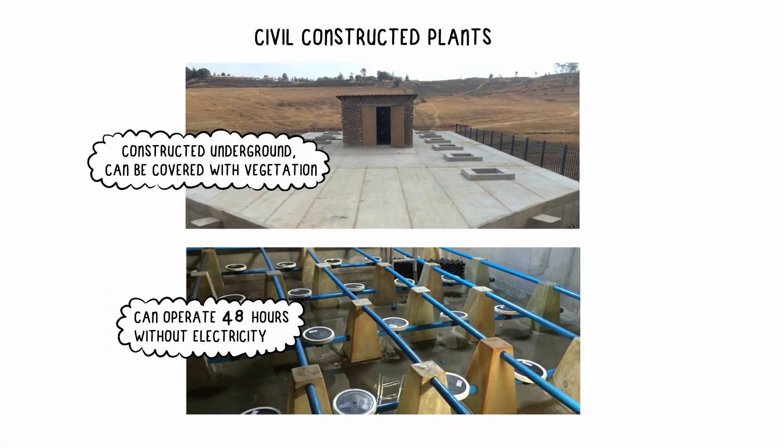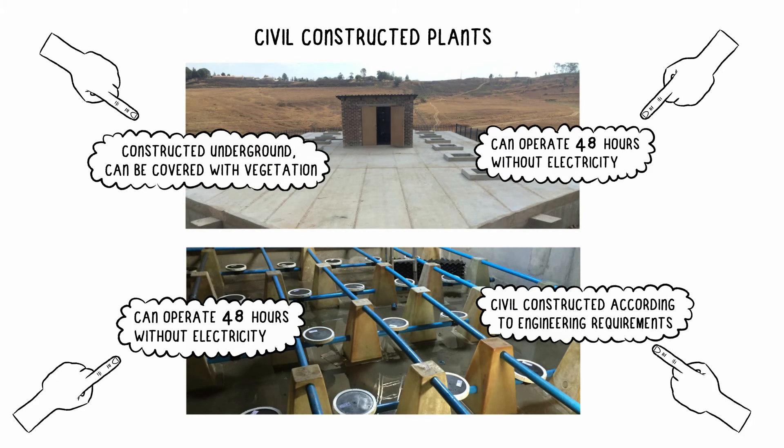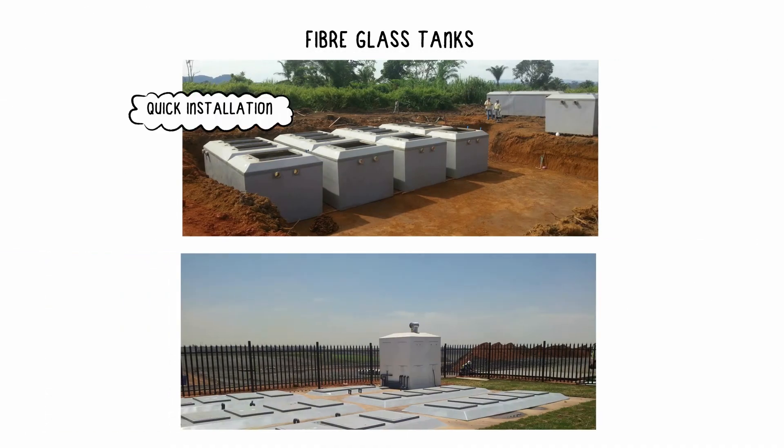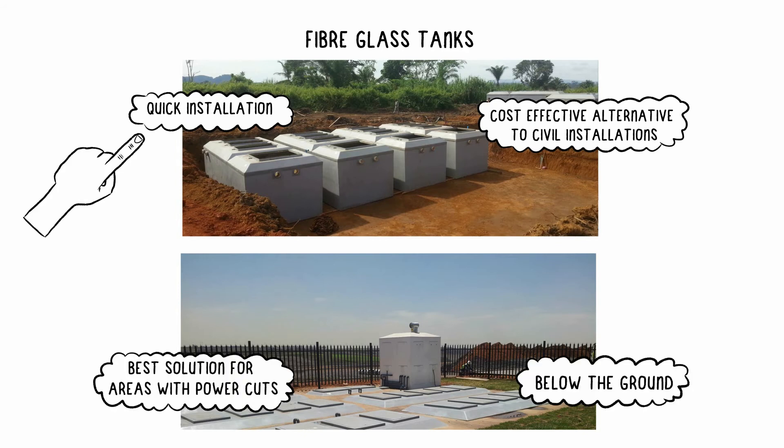Civil constructed plants are mostly for large flow, industrial, and housing development applications. The fiberglass tanks are mostly installed where it is required to have the system underground, and large plants can be installed in a matter of days.